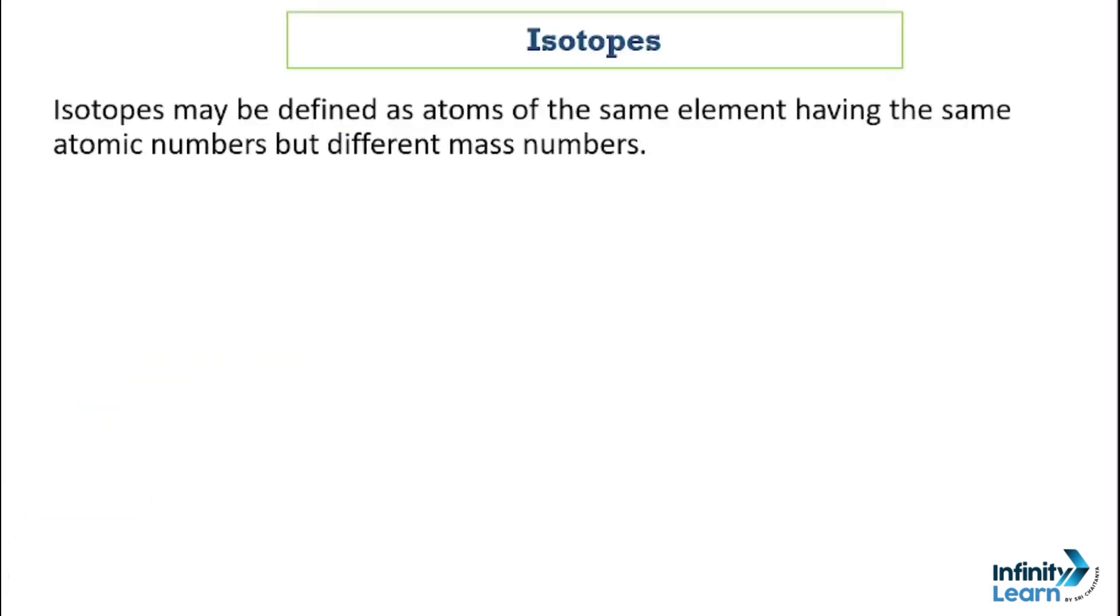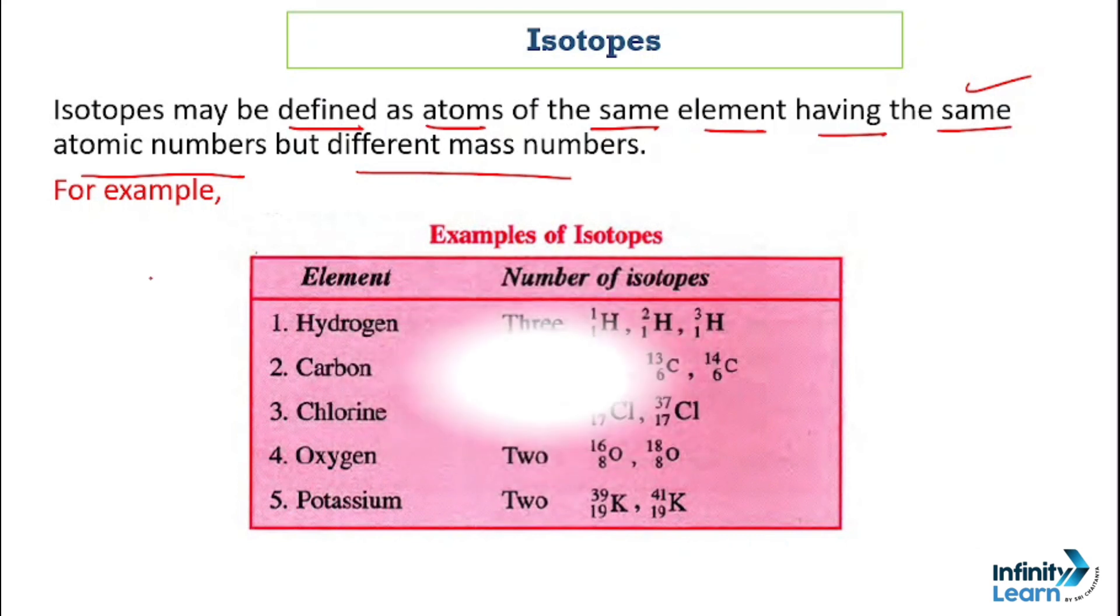So what do we mean by isotopes? Isotopes can be defined as the atoms of the same element having the same atomic numbers but different mass numbers.